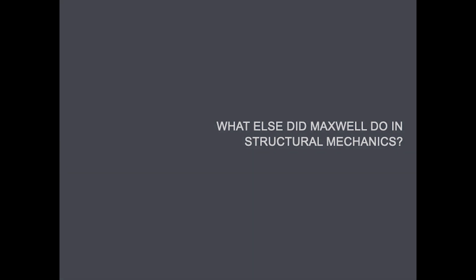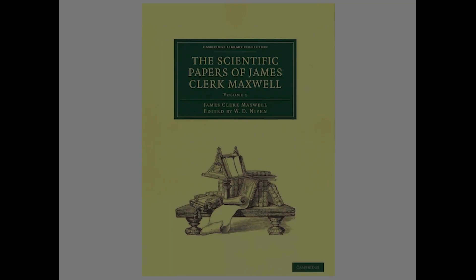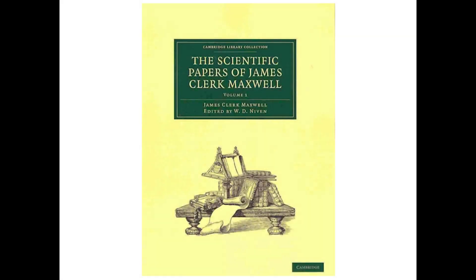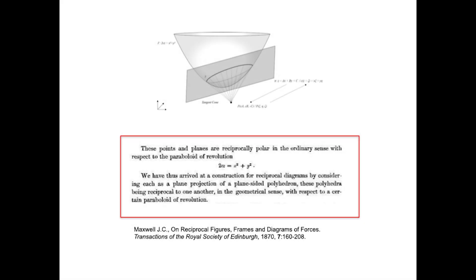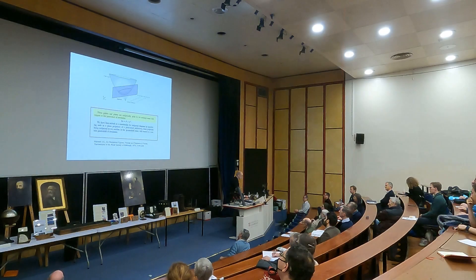The question is, what else did Maxwell do in engineering mechanics? We went to Cambridge University Press, we bought the collective works, and we sat down and tried to read them. We kept on running into stuff like this. I had no idea what that meant. These points and planes are reciprocally polar in the ordinary sense with respect to a paraboloid of revolution. Maxwell assumed his readers knew what he knew, and we no longer know what they knew, particularly projective geometry. We no longer know projective geometry, and that was essential to understand that.